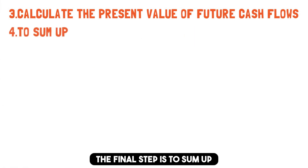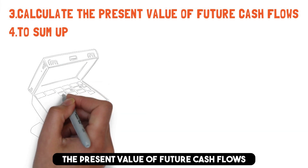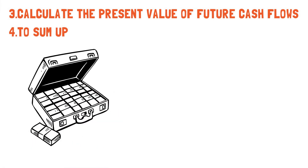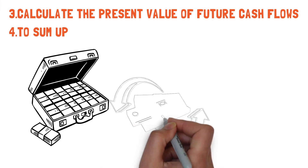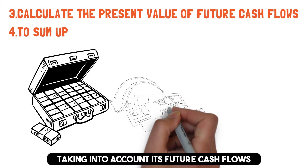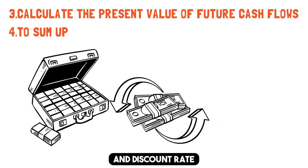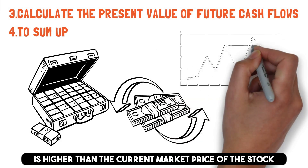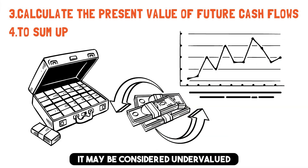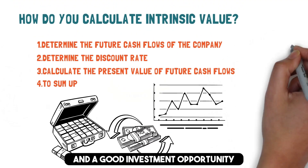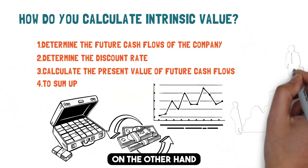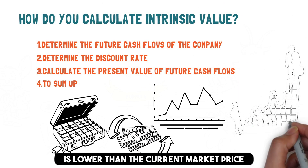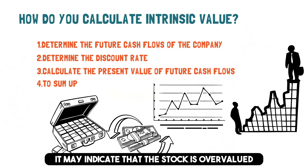The final step is to sum up the present value of future cash flows, which determines the intrinsic value of the stock. This is the estimated worth of the company, taking into account its future cash flows and discount rate. If the intrinsic value is higher than the current market price of the stock, it may be considered undervalued and a good investment opportunity. On the other hand, if the intrinsic value is lower than the current market price, it may indicate that the stock is overvalued.